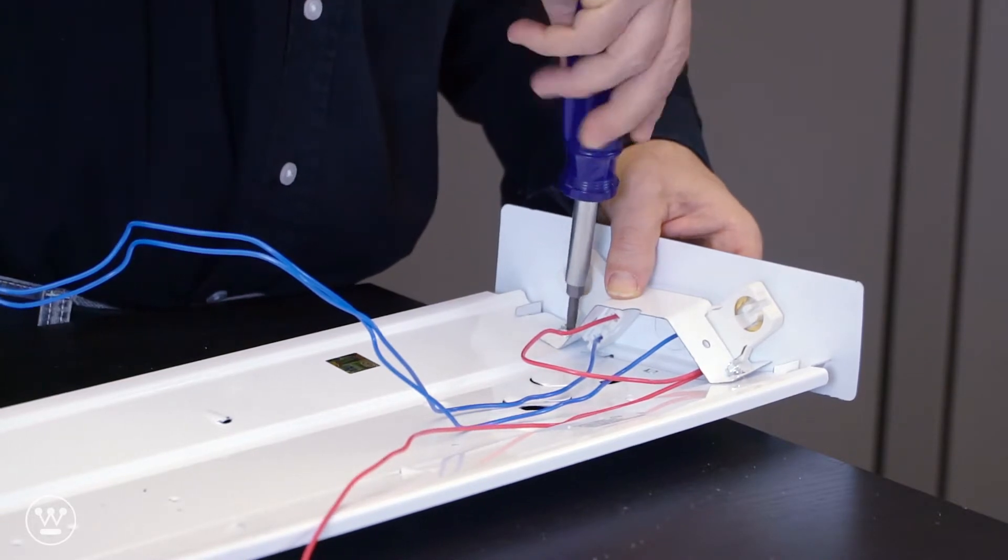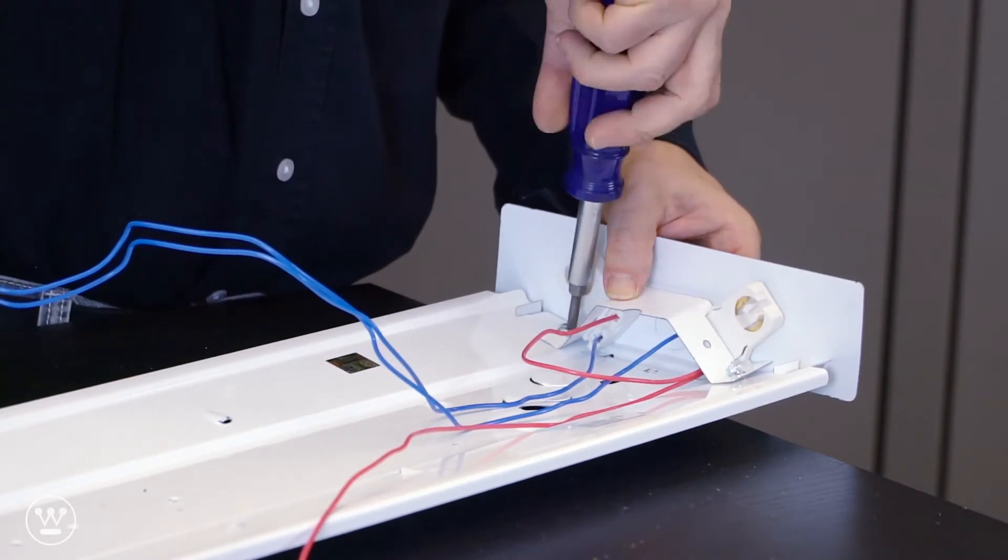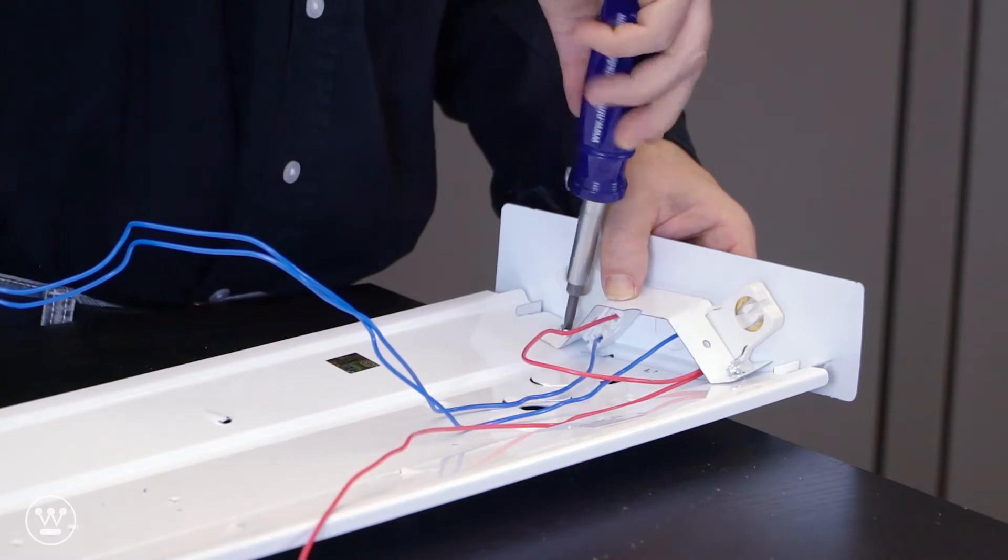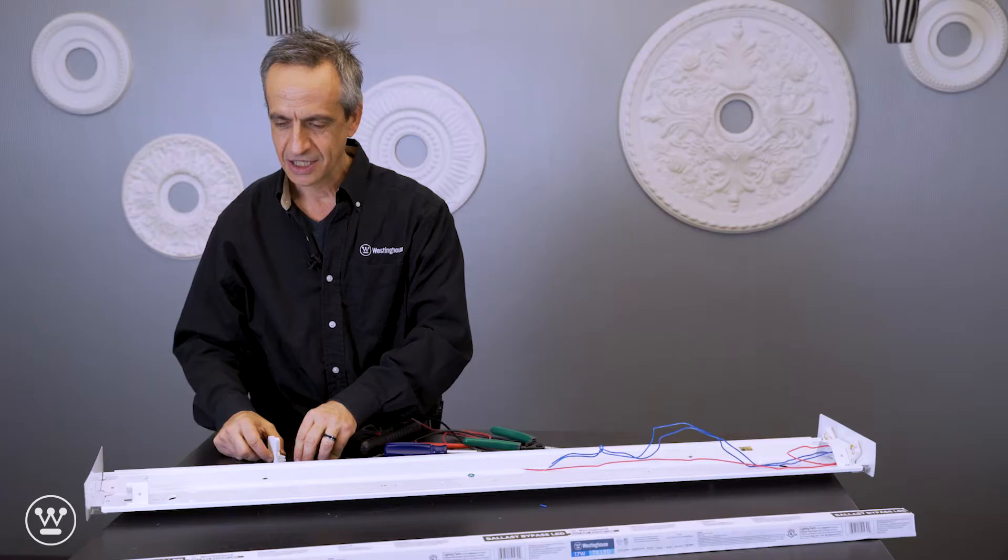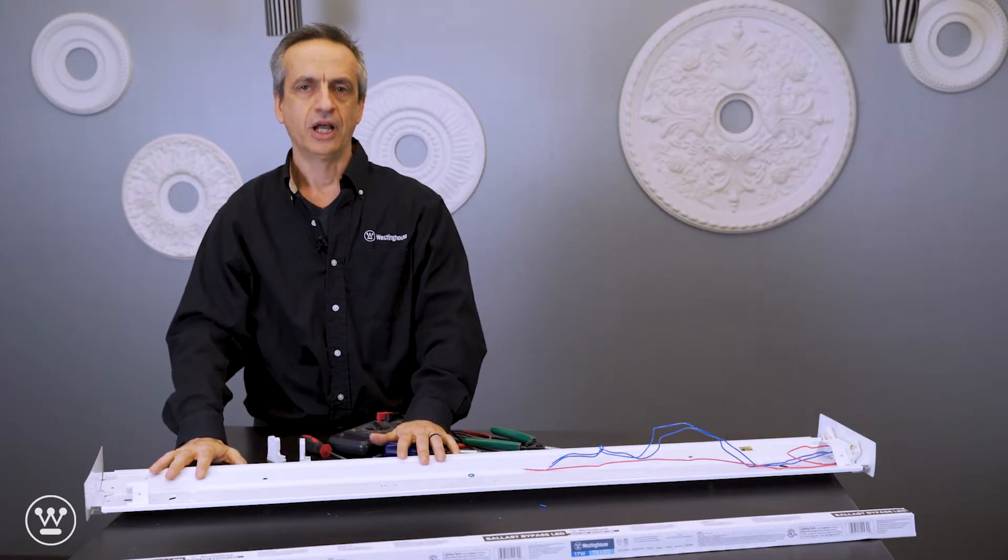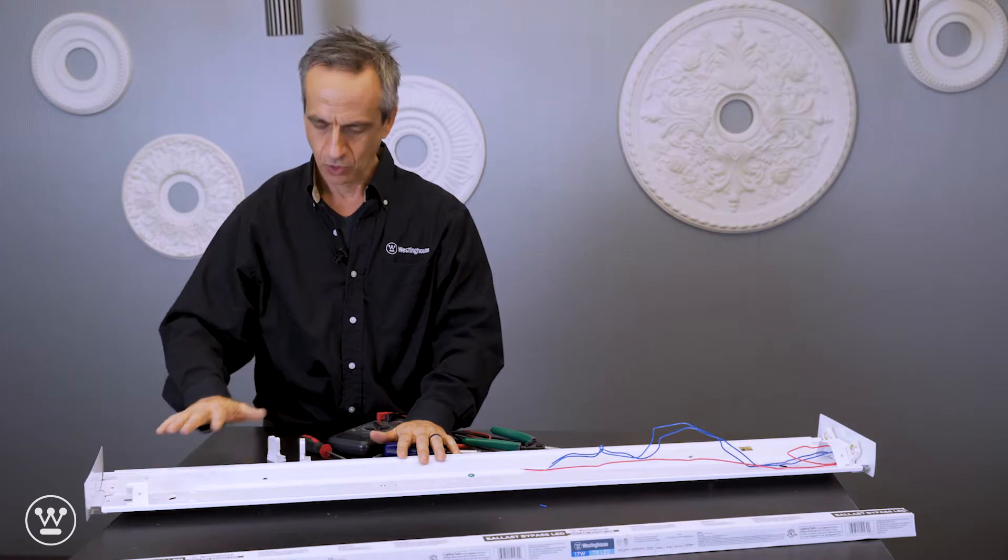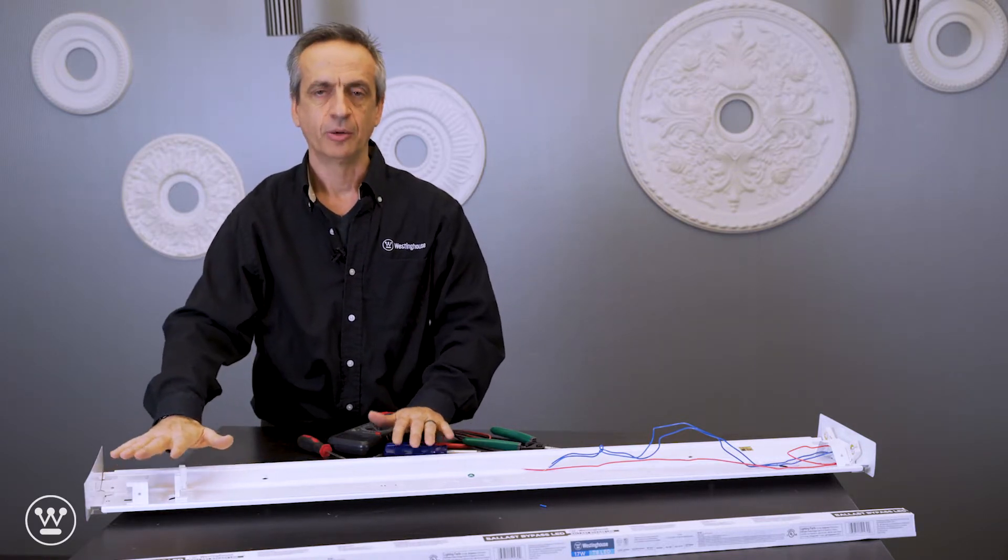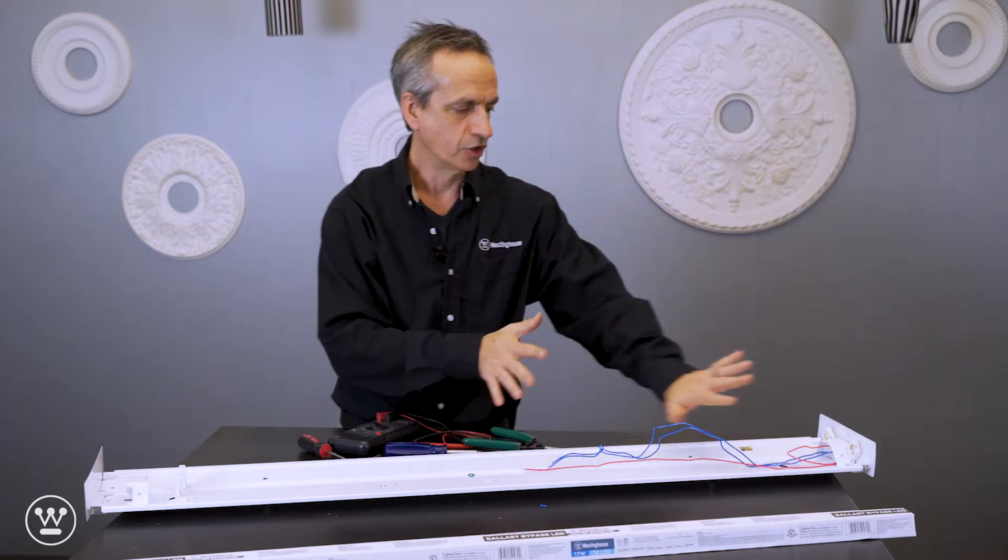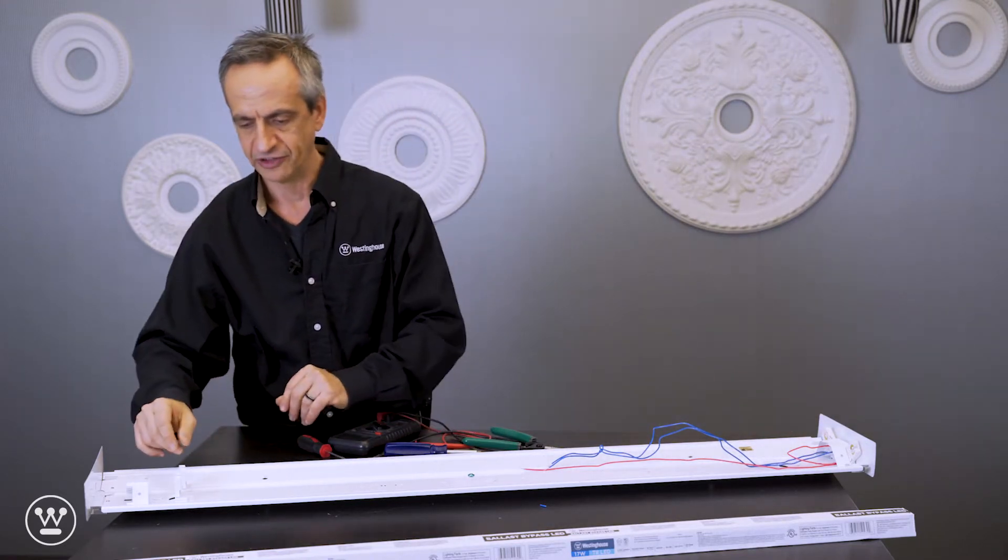Depending on the type of tombstone, you may need to use different mounting holes. Since this is a single ended wiring configuration, we're going to put tombstones or sockets on this end, but they don't get wired. All the wiring is on that one end of the fixture.